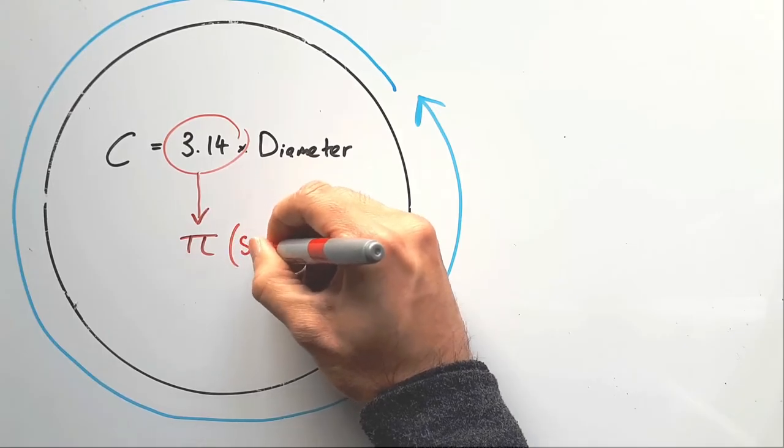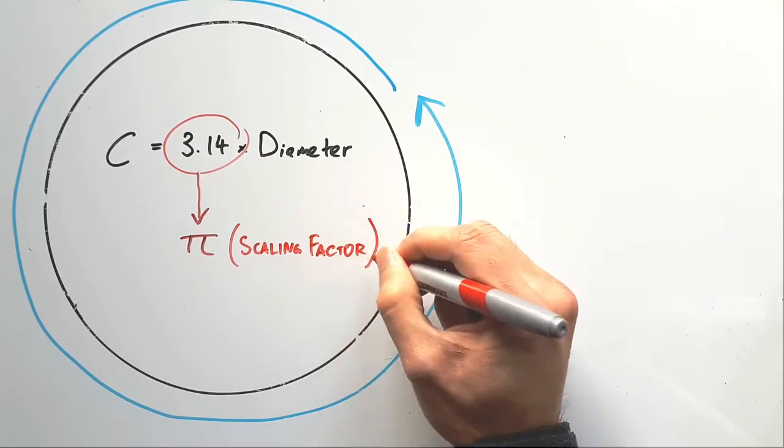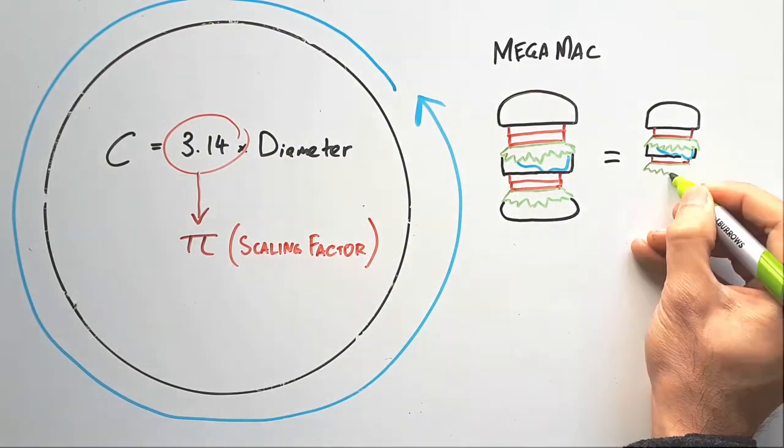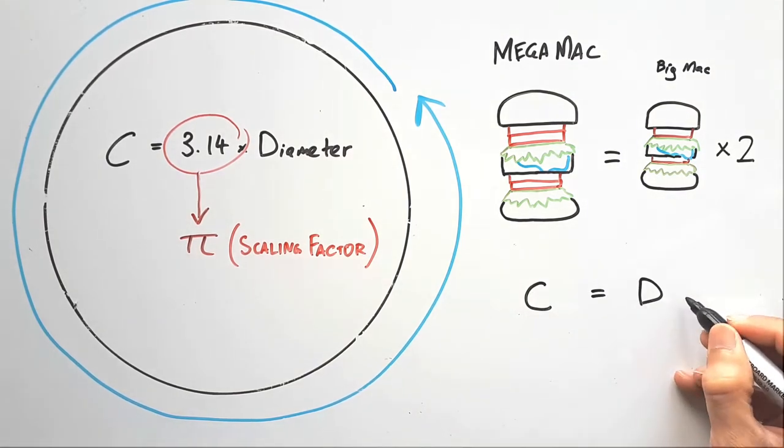So pi is a scaling factor of some kind. It gives you an idea of the size. It's like saying a Mega Mac is a double Big Mac. Well, a circumference is a pi diameter.